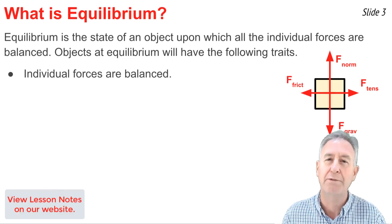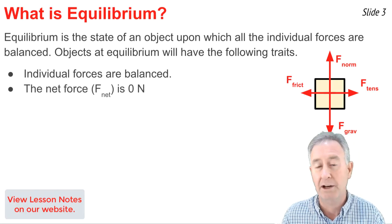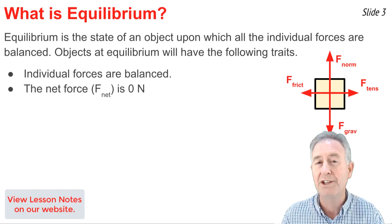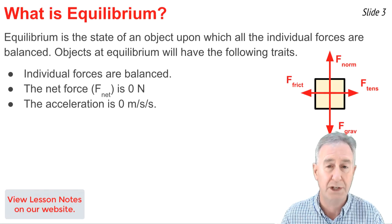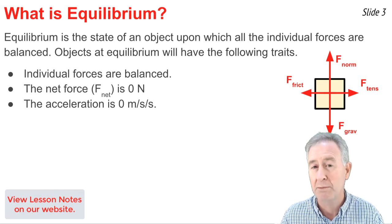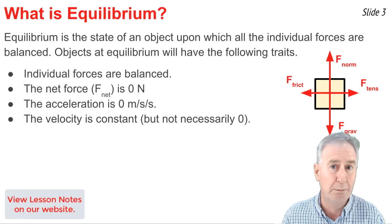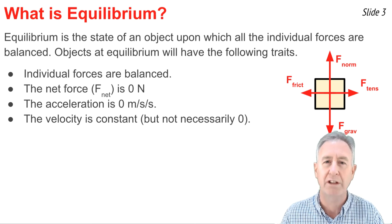That means oppositely directed forces are going to balance the effect upon each other. We sometimes say that all the forces add up to zero newtons. That is, the net force, or vector sum of all the forces, is zero newtons. This causes the object to have an acceleration of zero meters per second squared, which means that the object's velocity is constant. It's not necessarily zero, but if it is moving, it's moving with an unchanging velocity.